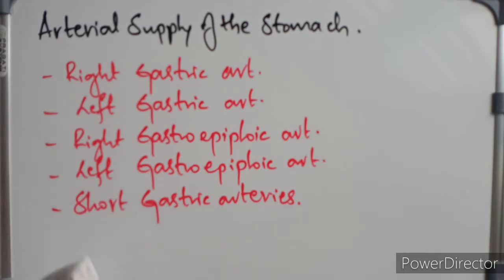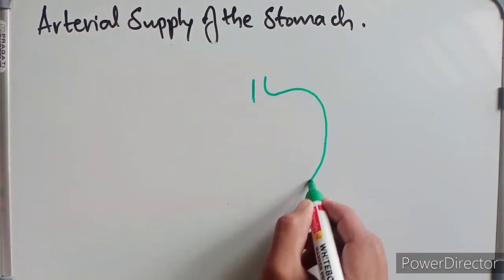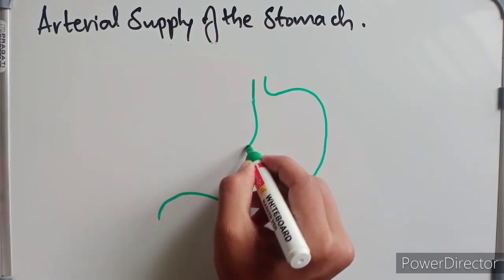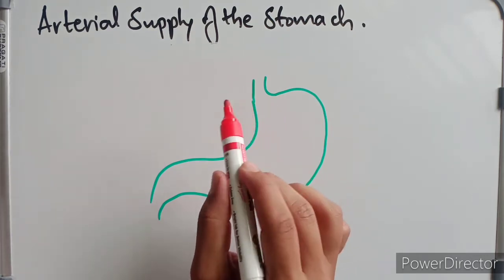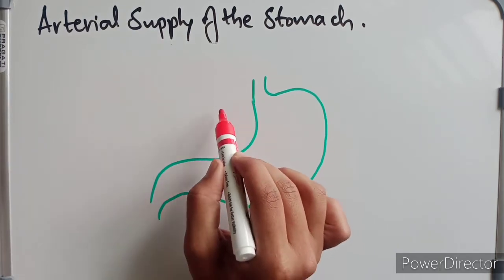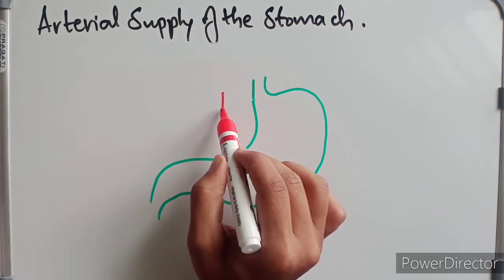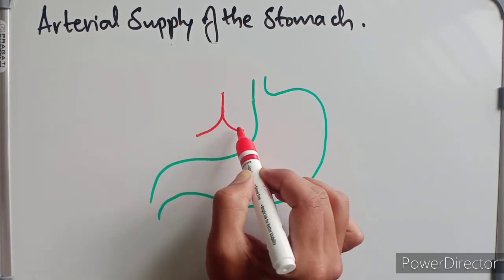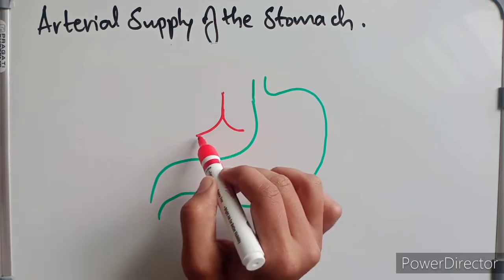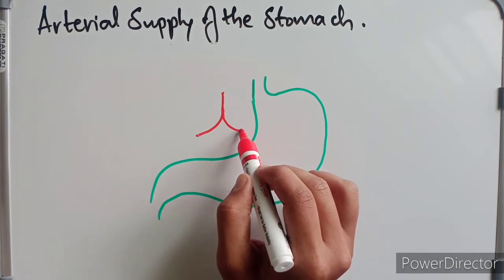I am going to draw and show how these arteries supply the stomach. This is the inferior end of the esophagus and this is the stomach. As the abdominal aorta descends, a branch called the celiac trunk arises and divides into two main branches: the common hepatic artery and the splenic artery. The splenic artery goes behind the stomach, drawn in dotted line.